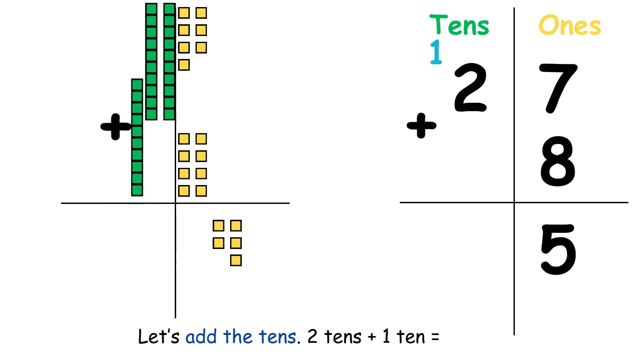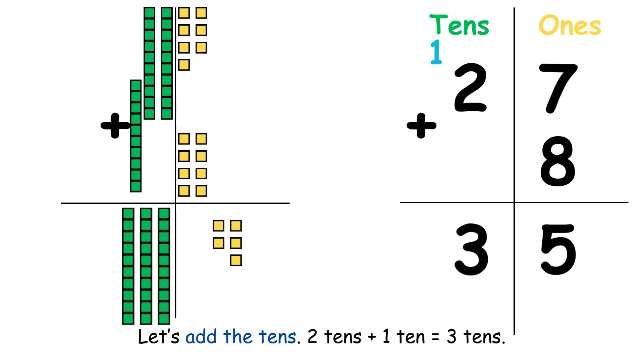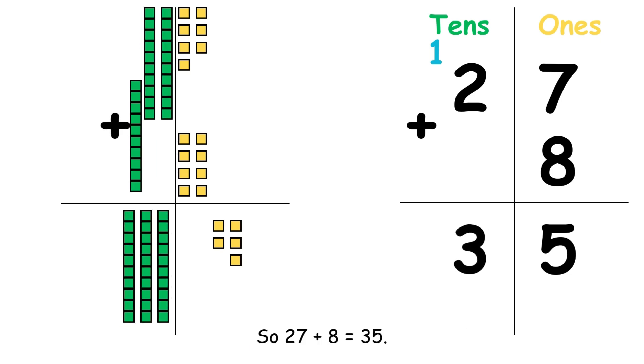Let's add the tens. 2 tens plus 1 ten equal 3 tens. So 27 plus 8 equals 35.